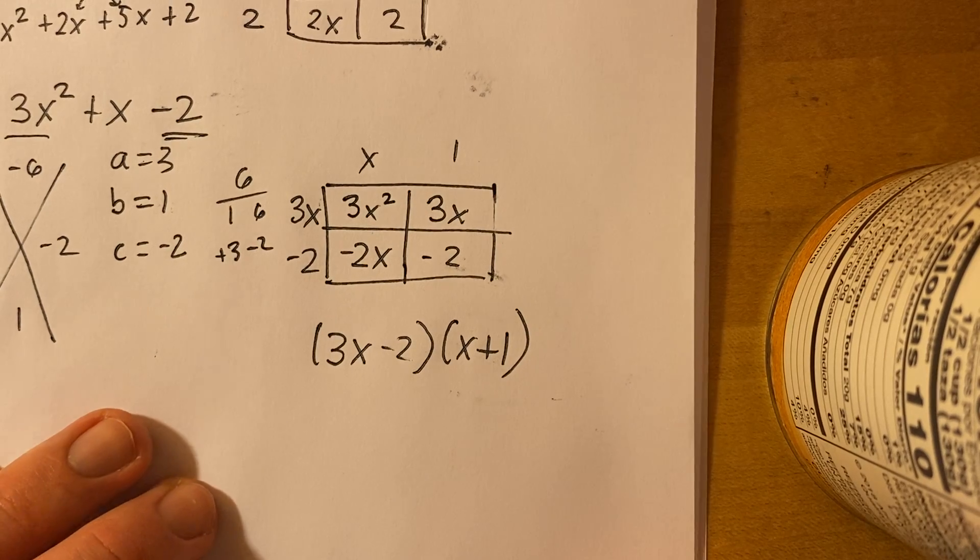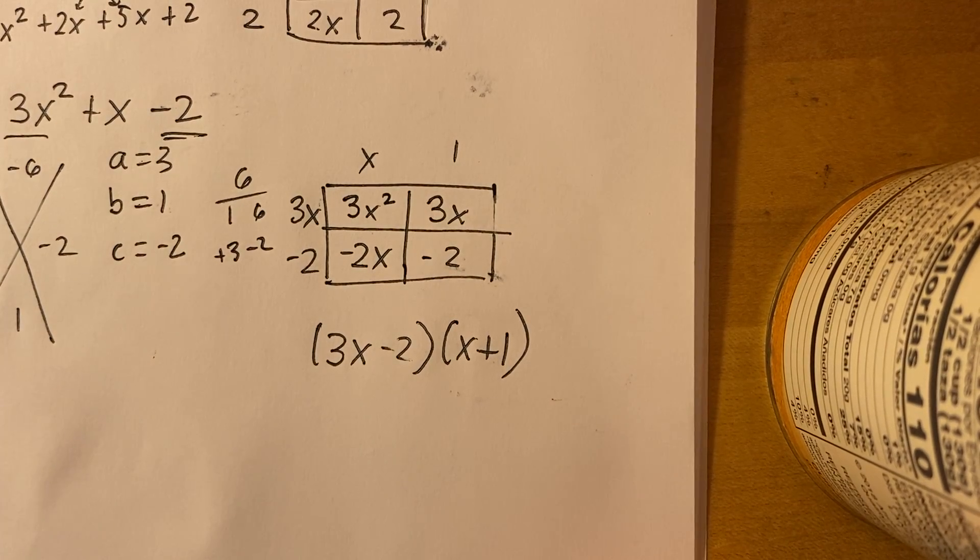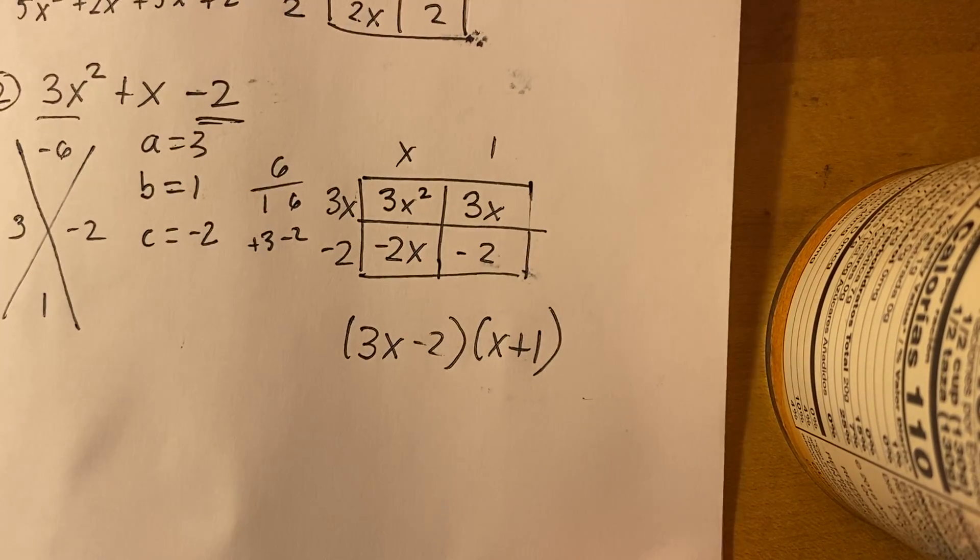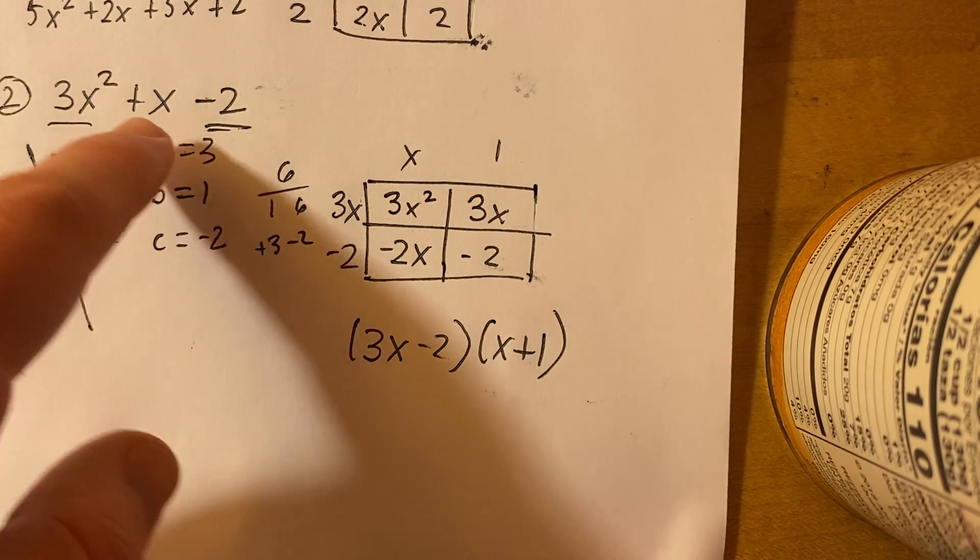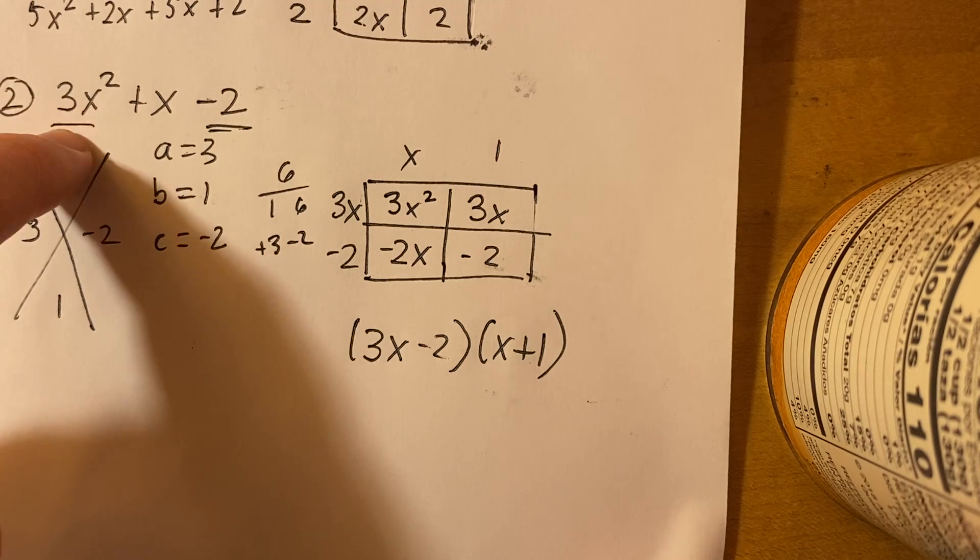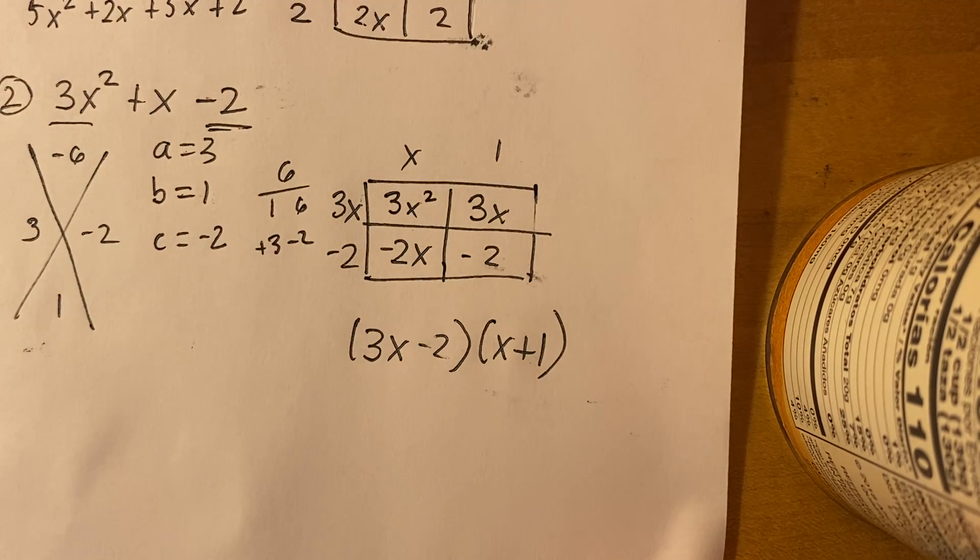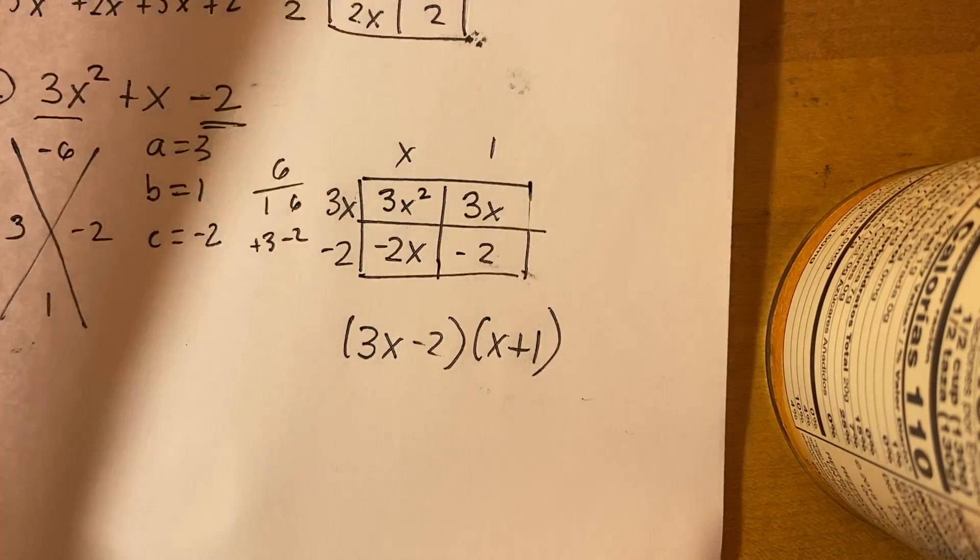Not too bad. So we have two more examples because this is a little bit tricky and there's a lot of steps to it. But remember, make your X, label your a, b, and c, a times c, b, and then figure it out from there. Two more examples come at us.